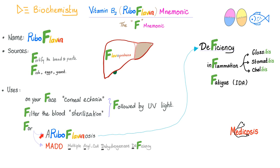You can use riboflavin for patients who suffer from ariboflavinosis. This is vitamin B2 deficiency, which is characterized by inflammation of the tongue called glossitis, inflammation of the mouth called stomatitis, inflammation of the angle of the mouth called angular stomatitis, and inflammation of the lips called cheilitis. Vitamin B2 deficiency can also lead to fatigue because it can cause iron deficiency, which leads to iron deficiency anemia — usually normocytic, normochromic in this situation.